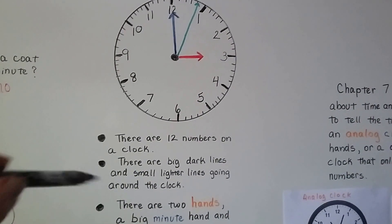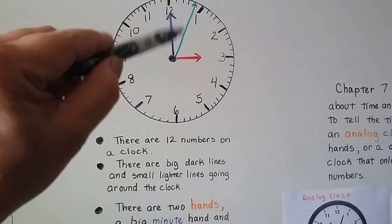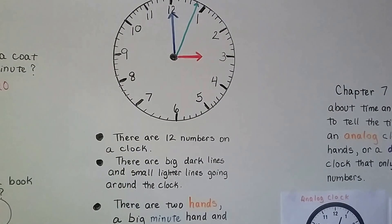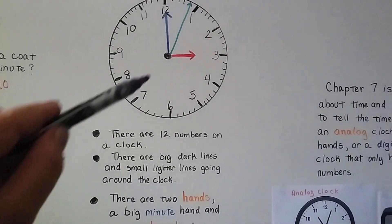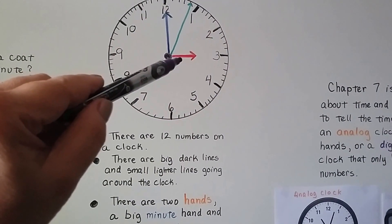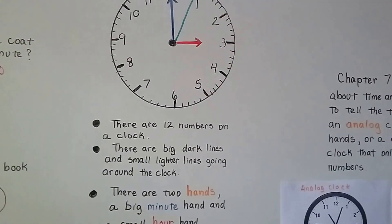And there's two hands. They call these hands. So a clock has hands. Isn't that something? And the small red one is for hours, and this big blue one is for minutes.